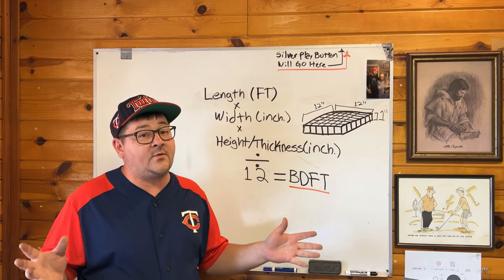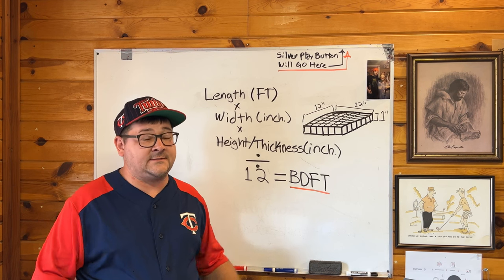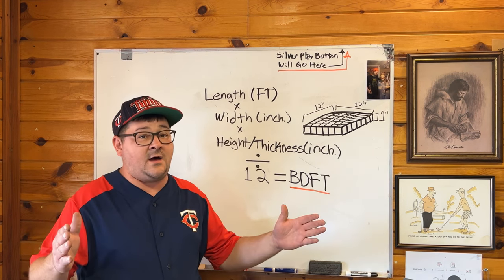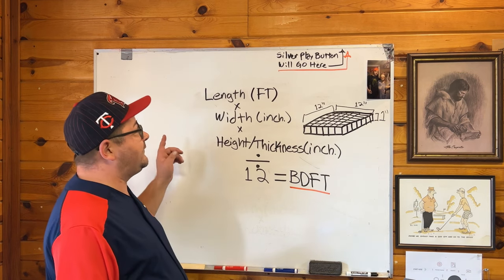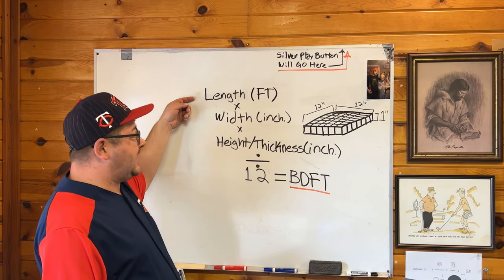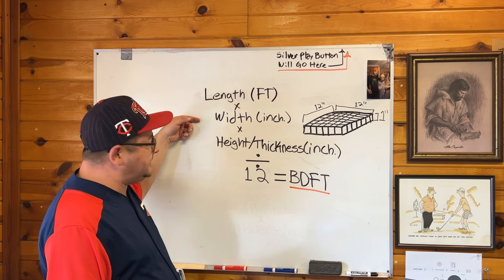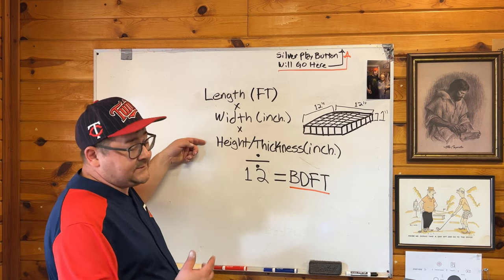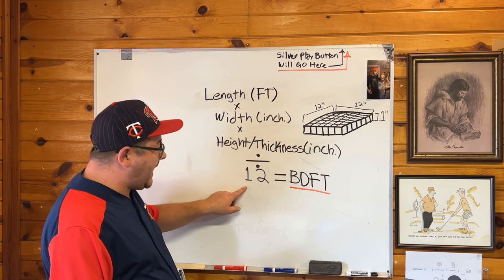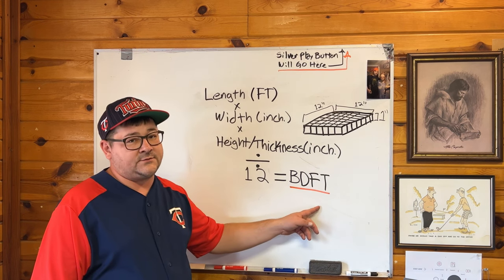Now here's another way you could do it. If you know that your lumber is going to be exactly 10, 12, or 8 feet long, you could use this formula: length in feet times width in inches times your height or thickness in inches, and you divide that by 12, which will also give you your board footage.